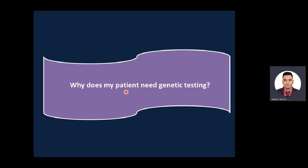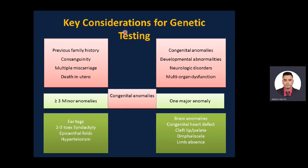Before ordering a genetic test, ask: why does my patient need genetic testing? Indications include previous family history, consanguinity, multiple miscarriages, death in utero, congenital anomalies, developmental abnormalities like autism, neurologic disorders like epilepsy, and multi-organ dysfunction. For congenital anomalies: three or more minor anomalies — such as ear tags, tooth syndactyly, epicanthal folds, or high-arched palate — warrant testing, as does one major anomaly such as brain anomalies, congenital heart defect, cleft lip, cleft palate, omphalocele, or limb absence.